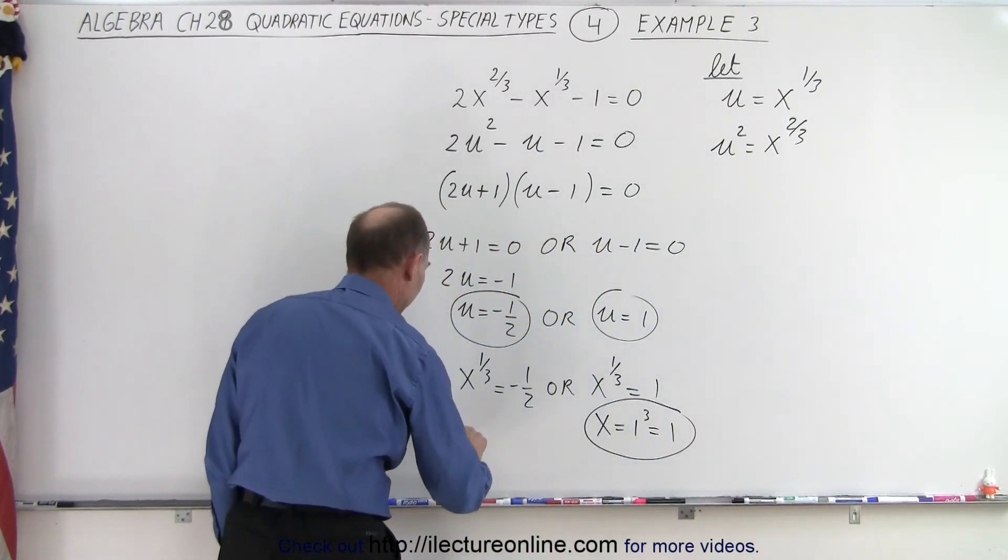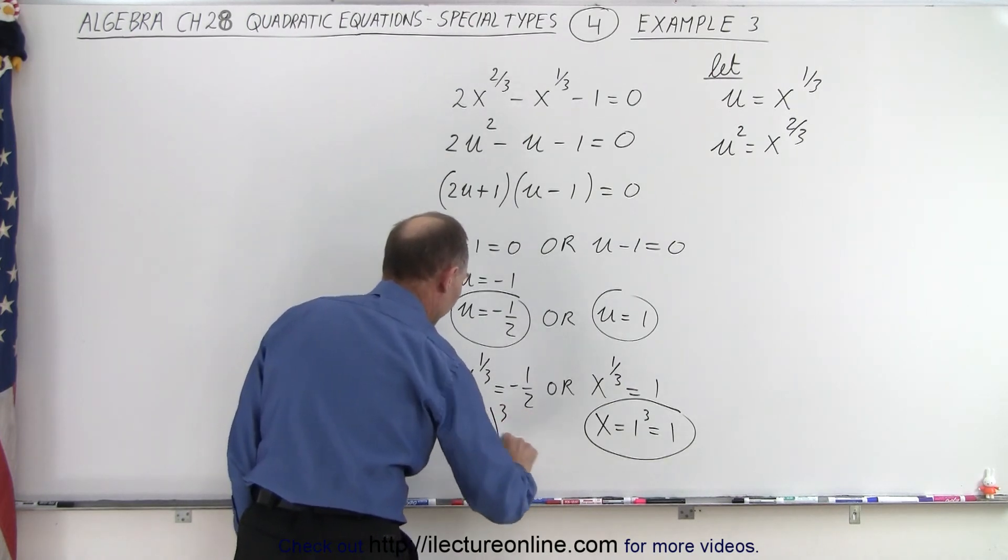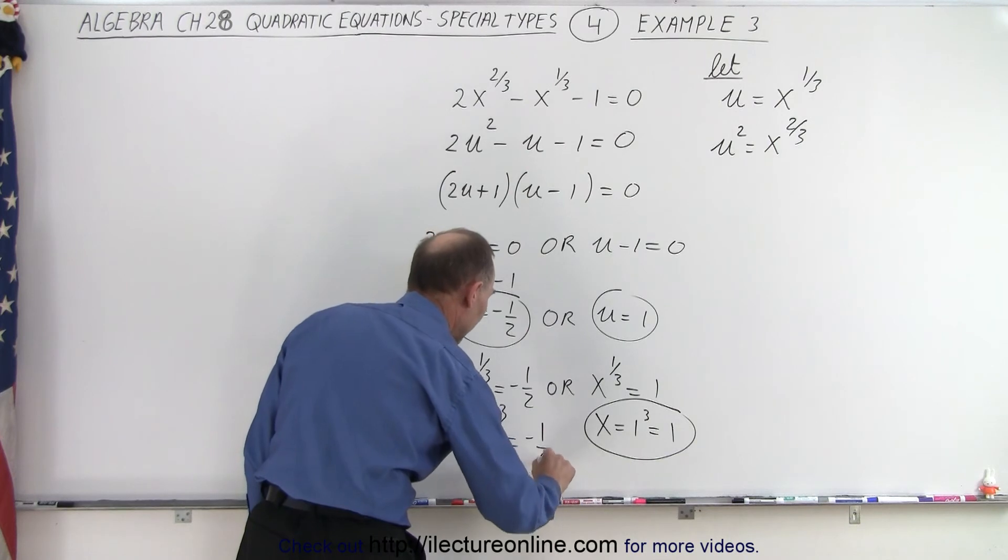In this case, I can say that x is equal to minus 1 half cubed. And of course, that would then be equal to minus 1 over 8.